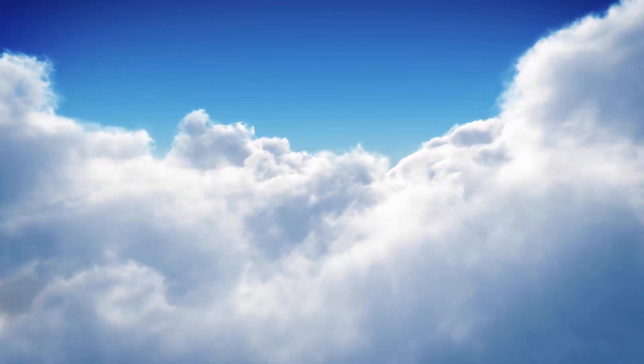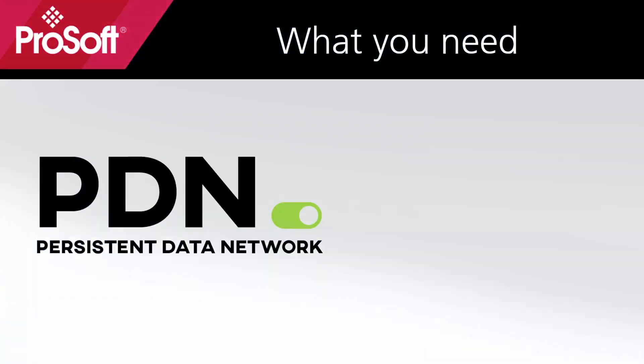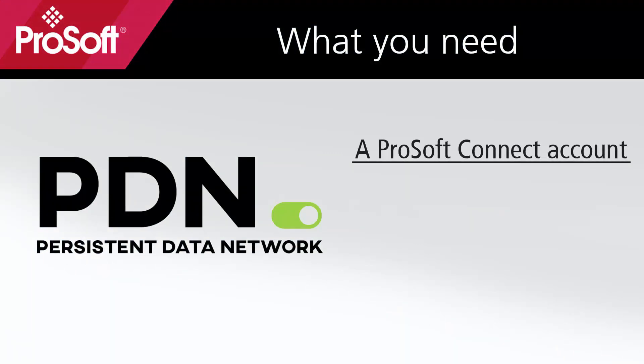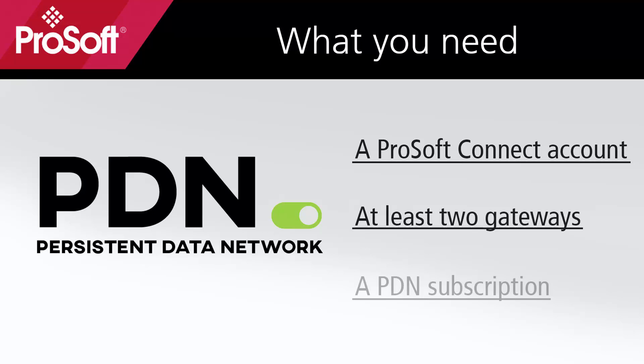Think of Persistent Data Network as a switch in the sky. To create a Persistent Data Network, you will essentially need three things: a ProSoft Connect account, at least two gateways — wired or wireless — and a PDN subscription for each gateway, which can be ordered through your distributor.